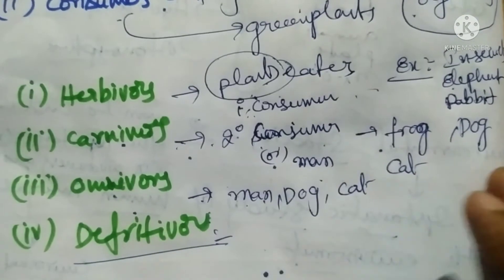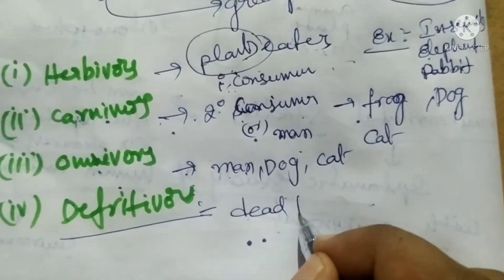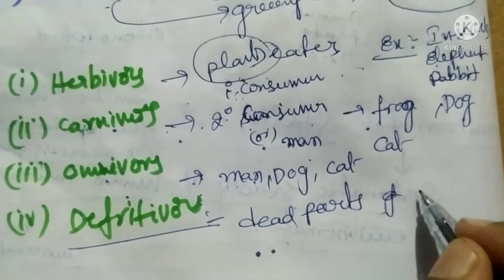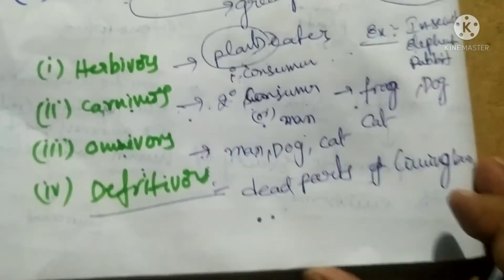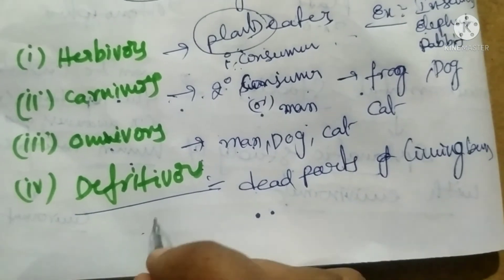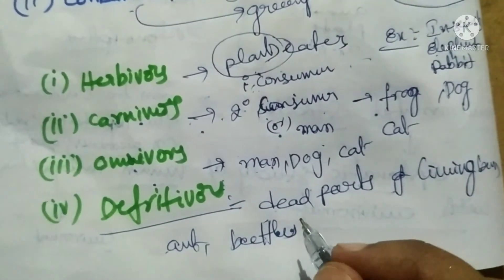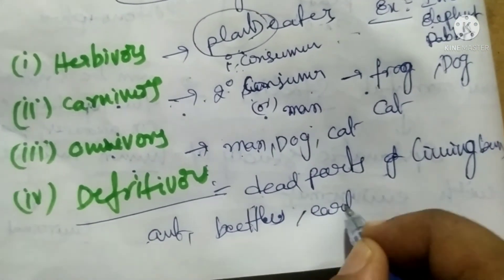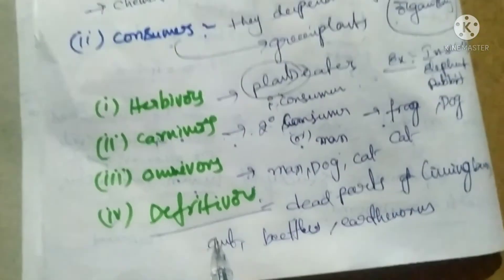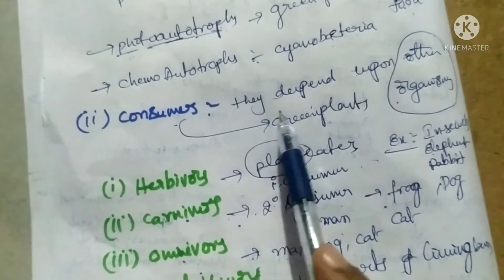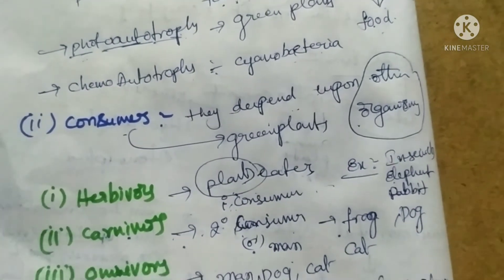Detritivores are the living beings which depend upon the dead parts of living beings and wastes of organisms.